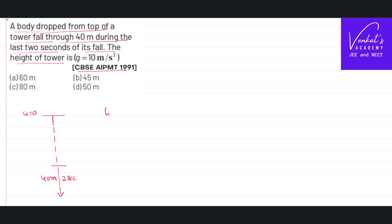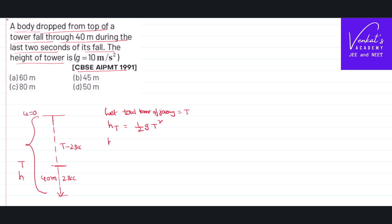So let us assume the total time of journey is T seconds. So in the total T seconds, the height it covers is equal to H, then H equals half G T squared. Then in all the time other than the last 2 seconds, that is T minus 2 seconds, the height it covers is half G times (T minus 2) squared.